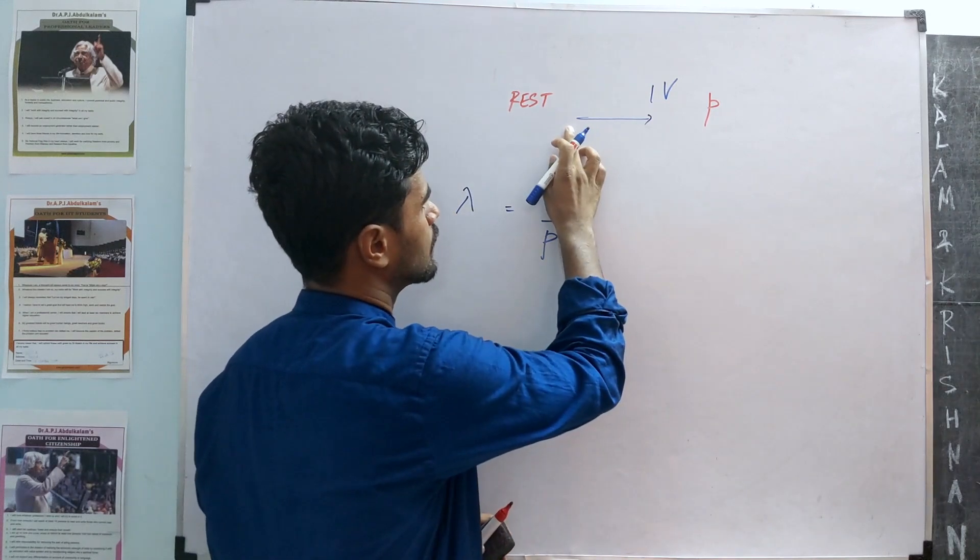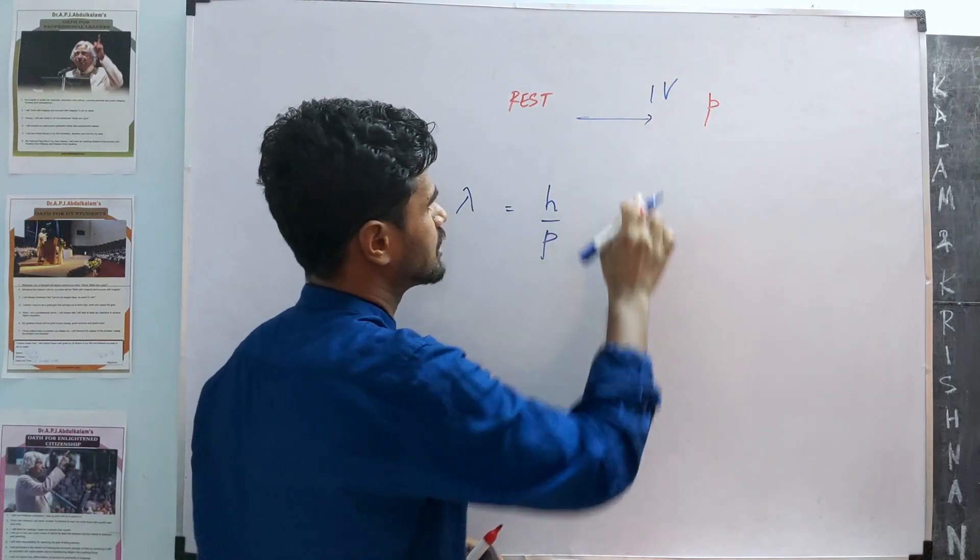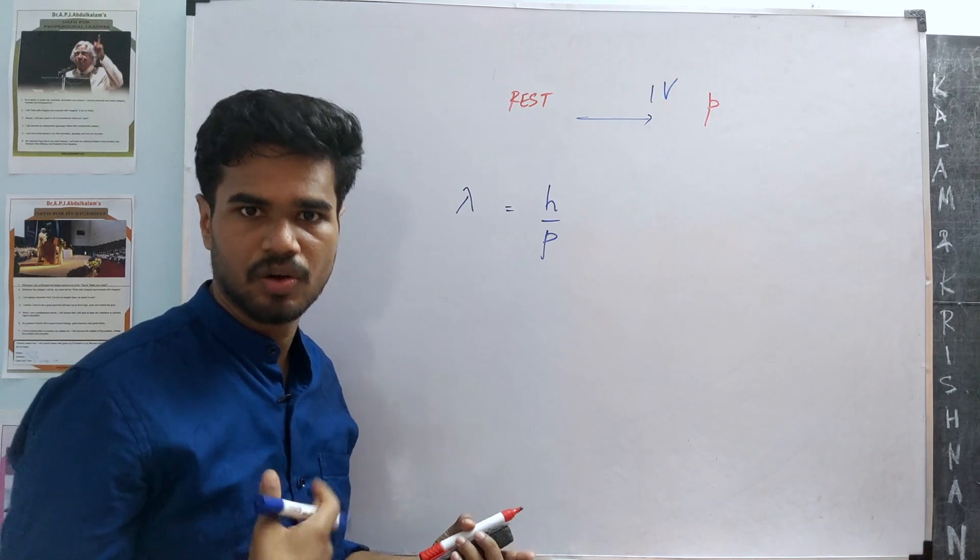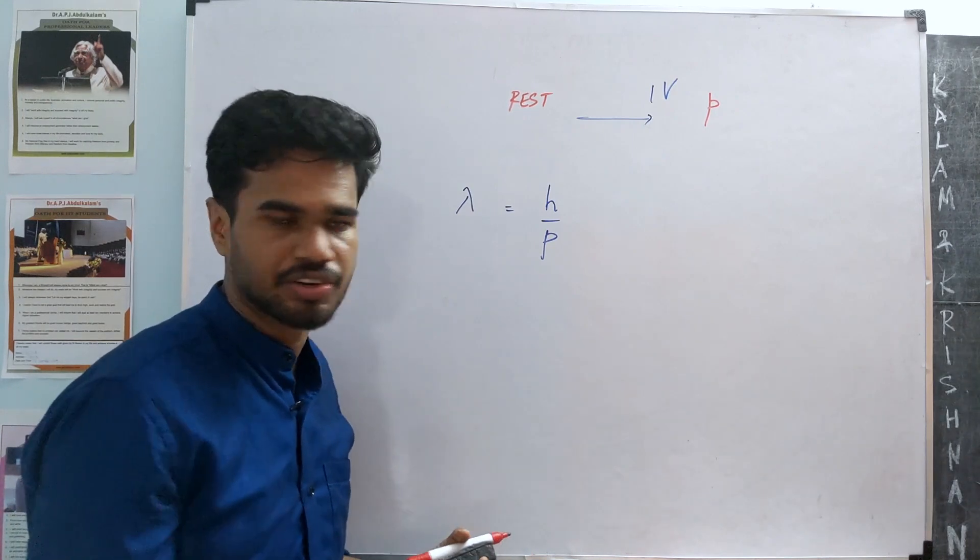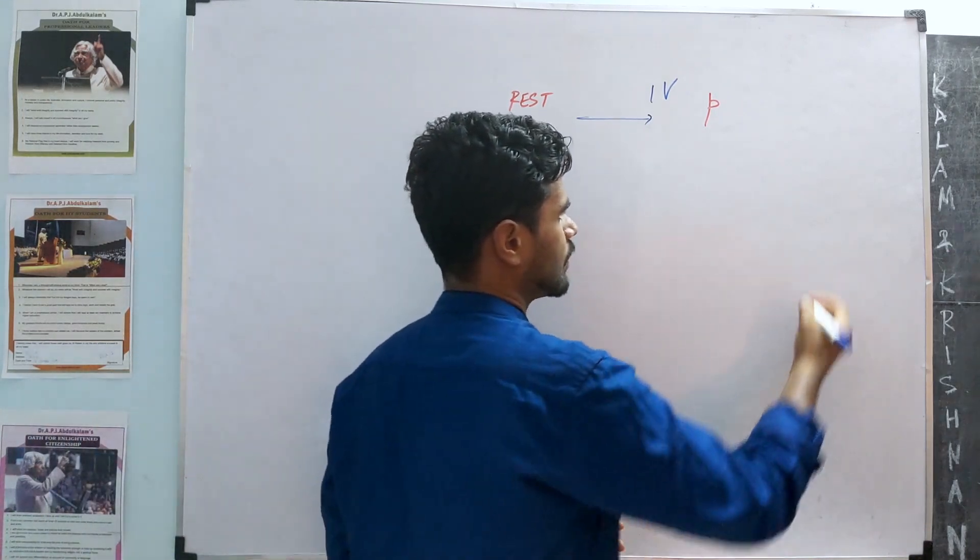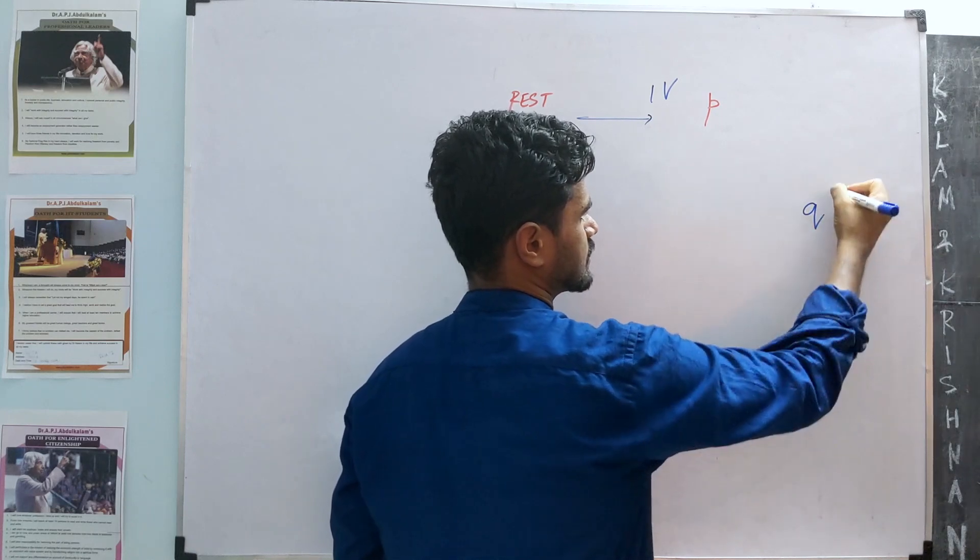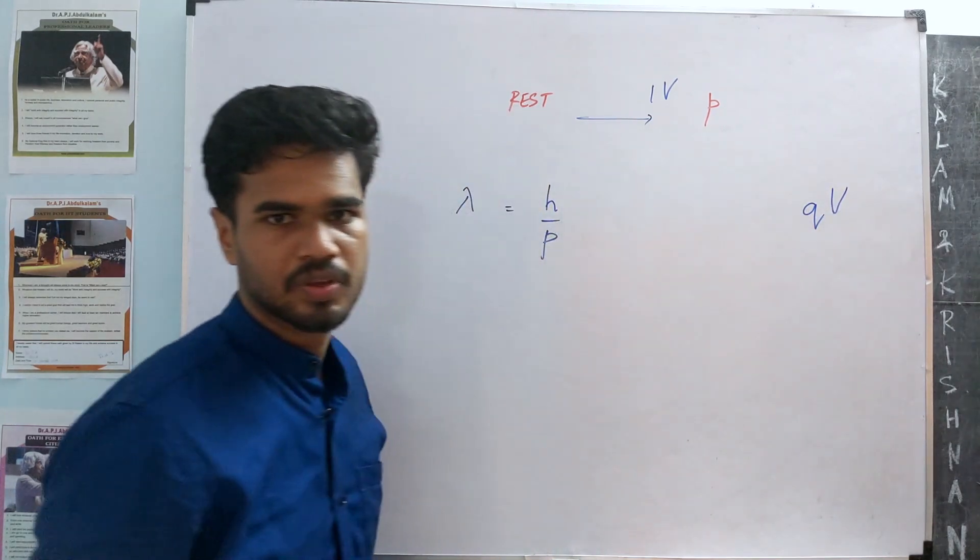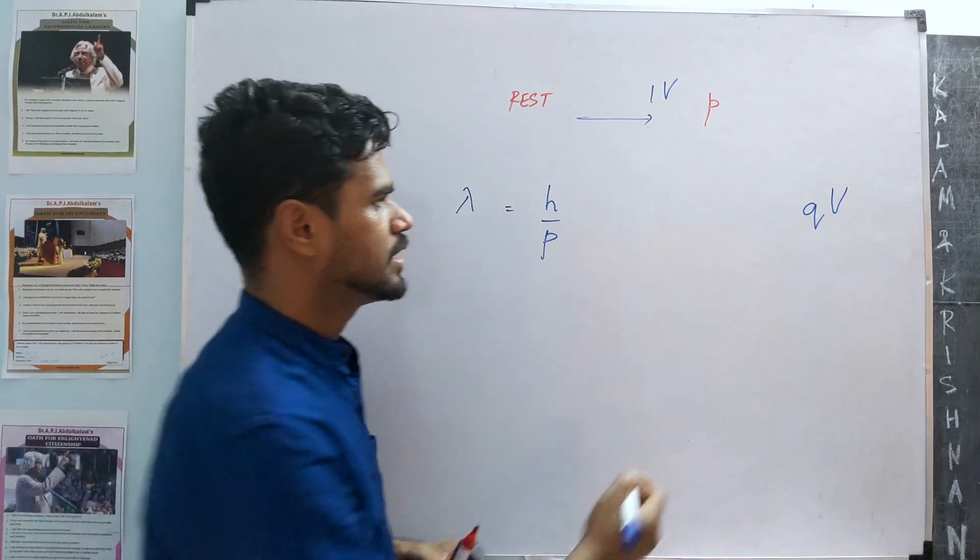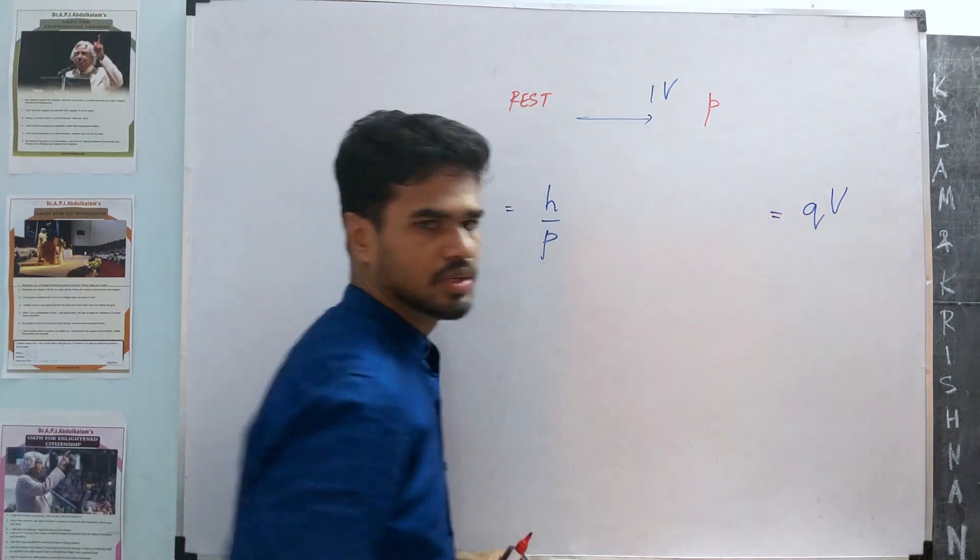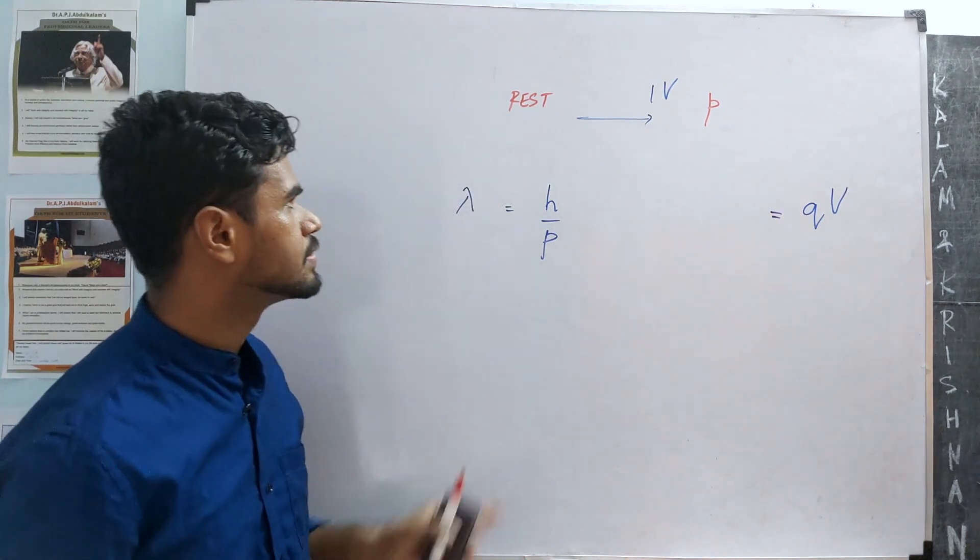This potential will do work on the electron; that's what moves the electron. So that work will be charge times amount of potential applied. That should be equal to the change in kinetic energy.